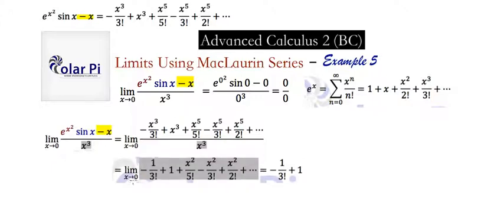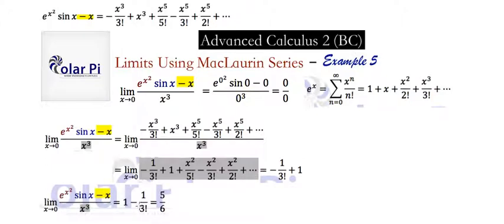When x goes to zero, only the first two terms survive — all the other terms have powers of x that go to zero. That's also why we didn't care to distribute any other terms when multiplying the Maclaurin series, because they all have too many powers of x. So our final answer is 1 minus 1 over 3 factorial, and 1 minus 1 over 3 factorial is the same as 5 over 6.